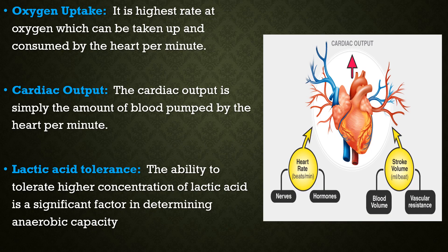Next is oxygen uptake by the muscles. It is the amount of oxygen which can be taken up and consumed by the working muscles from the blood. Next is cardiac output, which is simply the amount of blood pumped by the heart per minute — in other words, how much blood the heart pumps in one minute.